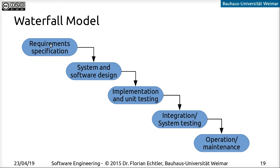The waterfall model originally comes from regular engineering — construction and mechanical engineering. The way it works is you start with requirement specification, then software design, then implementation and unit testing, then integration testing, and finally maintenance. This is very inflexible. Every time you finish one stage, you progress to the next, with no intention of changing anything — for example, the requirement specification after it's been completed.